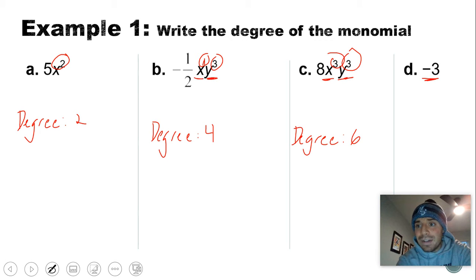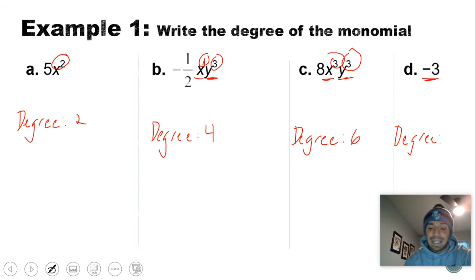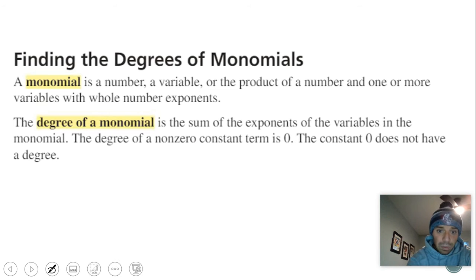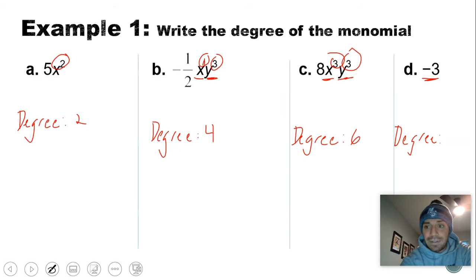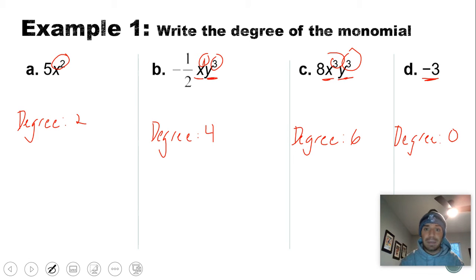And here I don't have any variables. This is the case where there is no variable — no x, no y, no z, no a. It's just a constant, negative three. The degree of a non-zero constant term is zero, so this would have a degree of zero. These are the most basic type — we're writing the degree of a monomial by adding up the exponents for each of our variables.